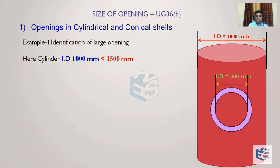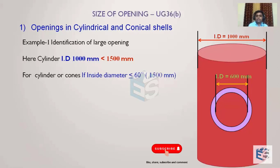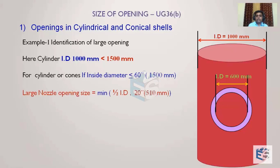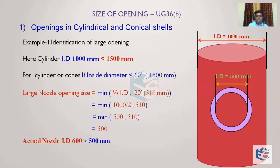First, check whether the cylinder diameter is less than or greater than 1500mm. Since 1000mm is less than 1500mm, the large opening criterion is: minimum of half the diameter or 510mm. Half of 1000 is 500, and minimum of 500 and 510 is 500mm. So if the nozzle size is more than 500mm, it falls under large opening.